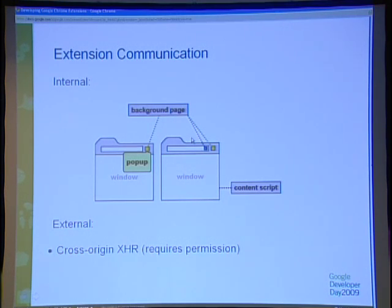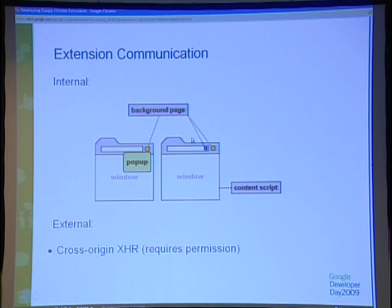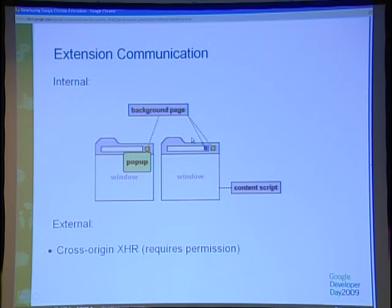Any given extension can have up to one background page, which is global in scope and lets you manage the different pieces of an extension. You can have a browser action with one instance per browser window, and then page actions and content scripts with one instance per browser tab. The way you manage interaction between all of those is by using extension communication — as part of the API, we allow you to send and receive messages between different pieces of your extension. An extension is also capable of cross-origin XHR by specifying a permission in your manifest file indicating which sites you're allowed to contact, and then you simply use XHR as you normally would.